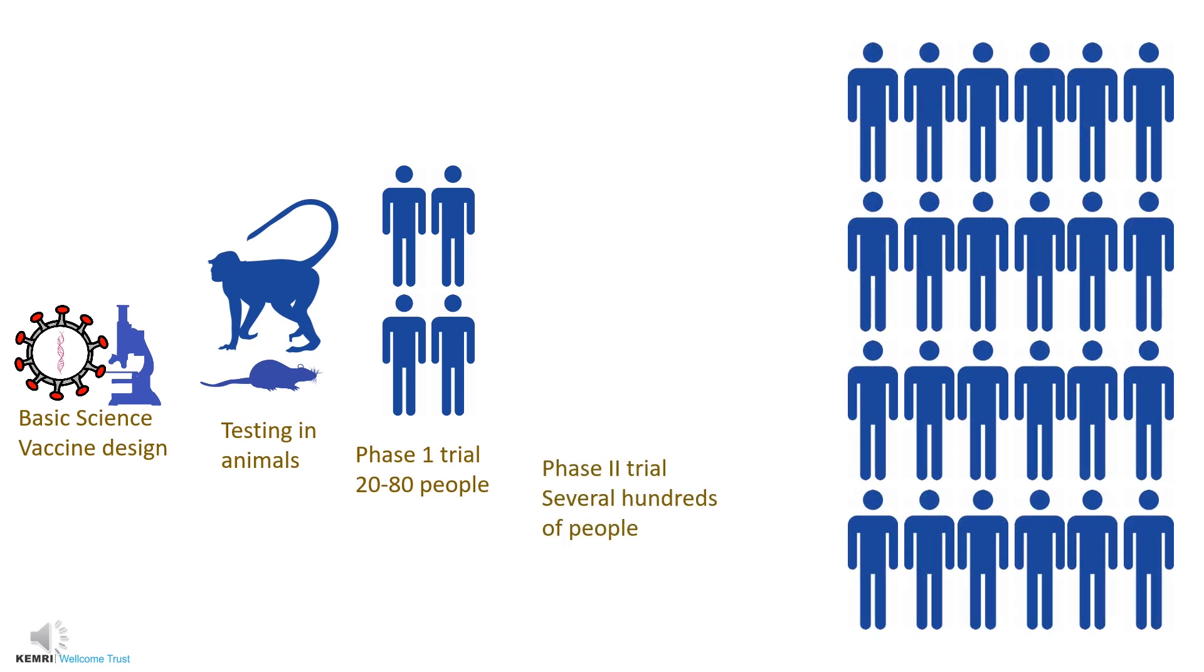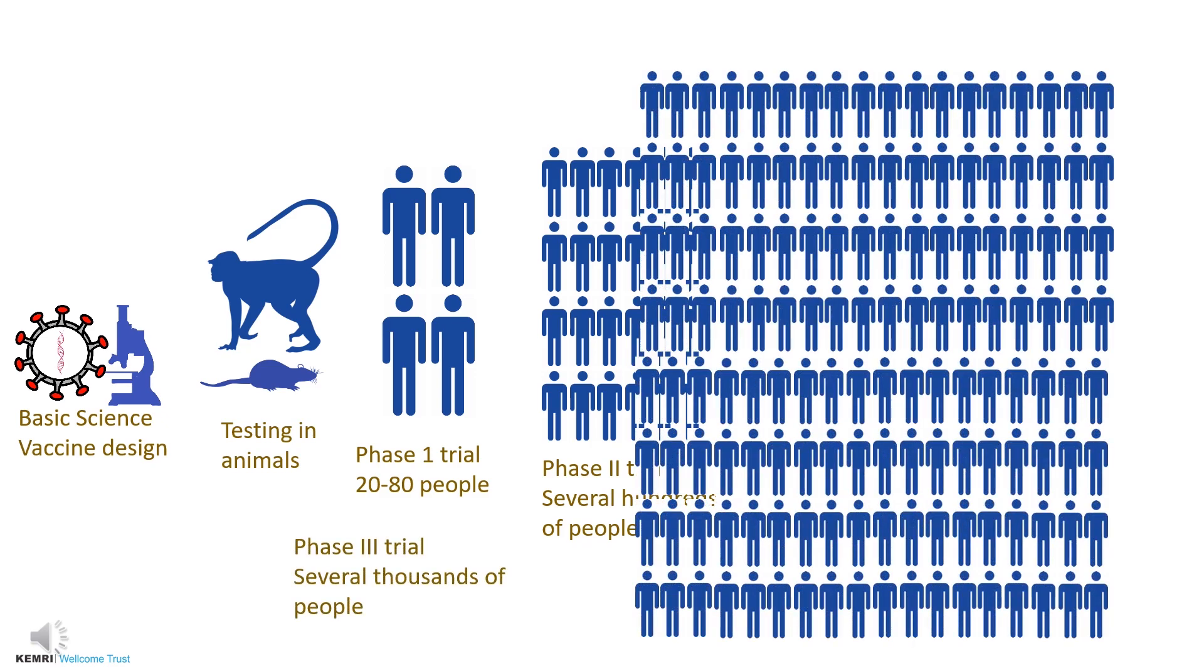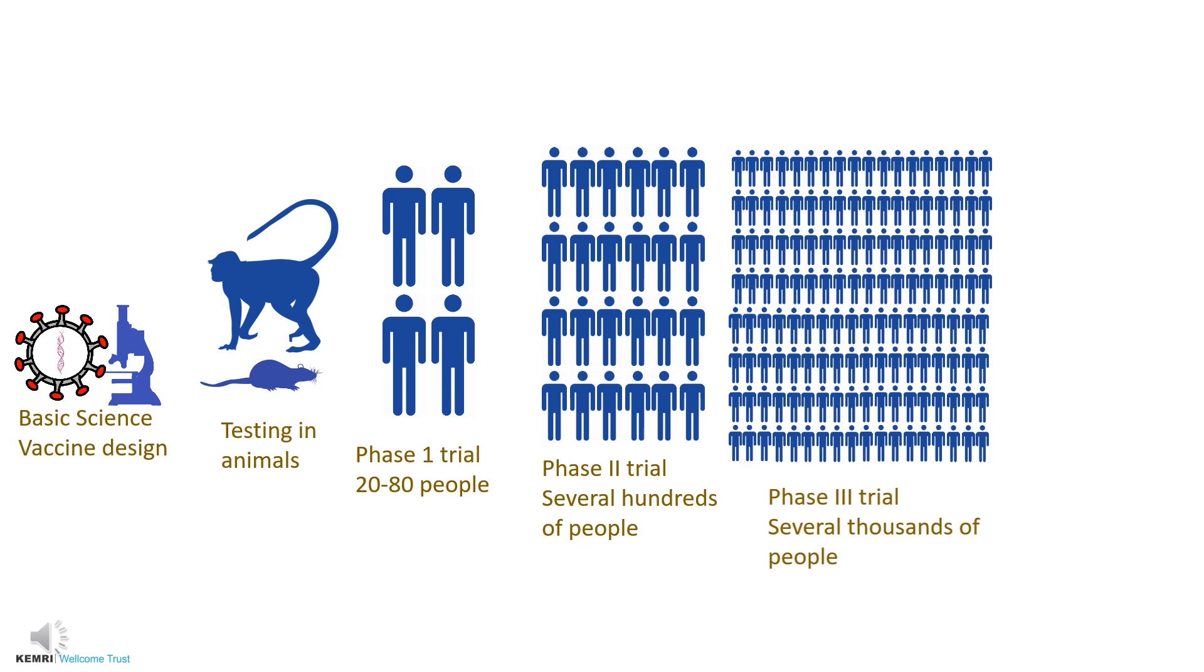Then, trials are done with larger numbers of volunteers to see whether they give protection against disease. When there is strong, carefully reviewed evidence of protection, regulatory bodies give permission for the vaccines to be rolled out to larger populations, but the vaccines are still monitored.